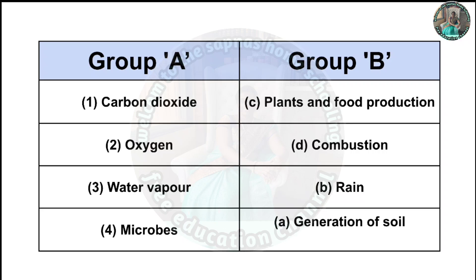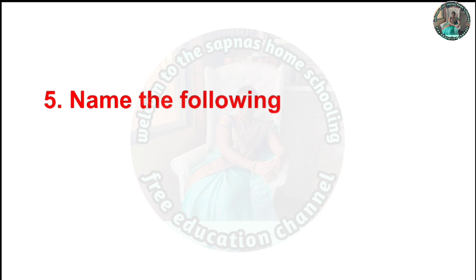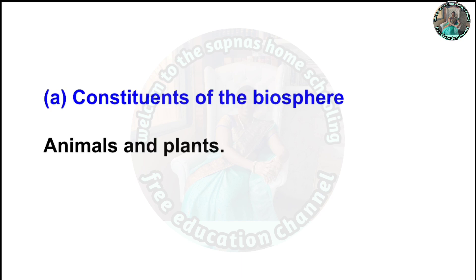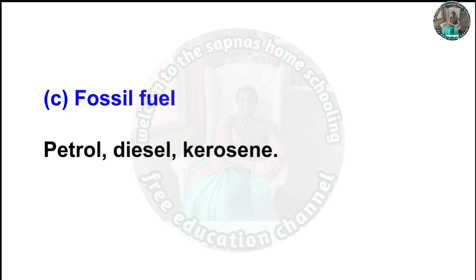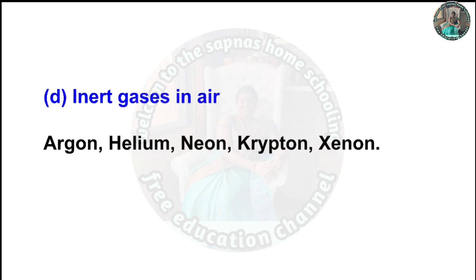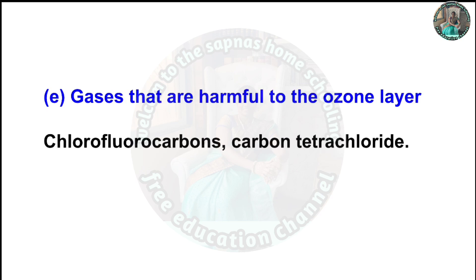Question 4: Match the following. Group A - Group B: Carbon dioxide → photosynthesis; Oxygen → respiration; Water vapor → rain generation; Microbes → decomposition of soil. Name the following: Constituents of the biosphere - Animals and plants: Biotic. Constituents of soil - Microbes, insects, rodents like rats and mice. Fossil fuels - Petrol, diesel, kerosene. Inert gases in air - Argon, helium, neon, krypton, xenon. Gases harmful to the ozone layer - Chlorofluorocarbons and carbon tetrachloride.